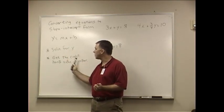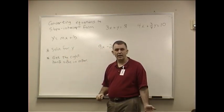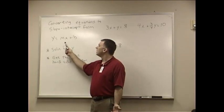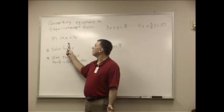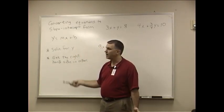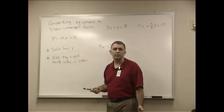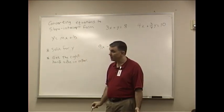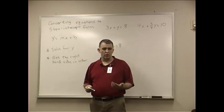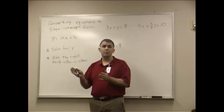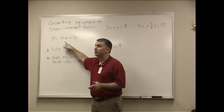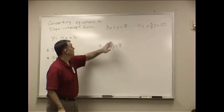The other thing that you want to do is make sure you get the right-hand side in the right order. It's MX plus B. So the X part comes second and then the part that's a regular number comes last. It's really just a matter of using your equation rules to manipulate the equation to get it to look like this.